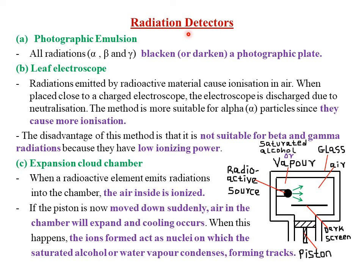The first type of radiation detector is what we call a photographic emulsion. All radiations — that is the alpha particle, beta particle, and also the gamma rays — they usually blacken or darken a photographic plate or what we call a photographic film.